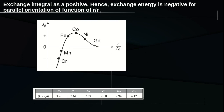This spontaneous magnetization is the phenomenon of ferromagnetism. When J_ij is positive, the exchange energy is negative, and the spins spontaneously align themselves in the same direction to reduce the exchange energy. For transition metals like iron, cobalt, and nickel, the value of R/R_D is greater than 3 and J_ij is positive. Hence, the exchange energy is negative for parallel orientation of spins, and they exhibit ferromagnetic properties.